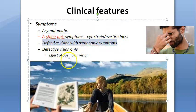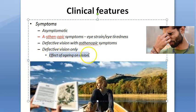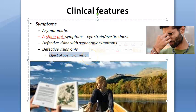When hypermetropia is quite large, they cannot correct it by voluntary accommodation, so they have defective vision — more so for near. These people are called long-sighted. When hypermetropia is so high the person gives up trying to accommodate, they will have defective vision for both near and distance. As age progresses and they can no longer accommodate, it becomes manifest hypermetropia — the condition was there all along but only shows now because accommodation was compensating.